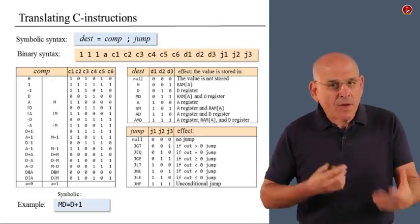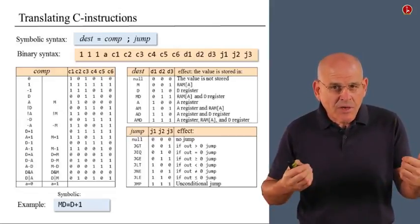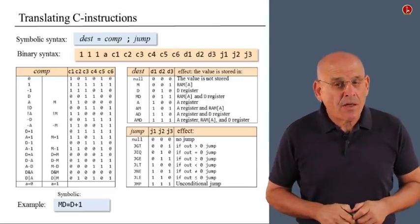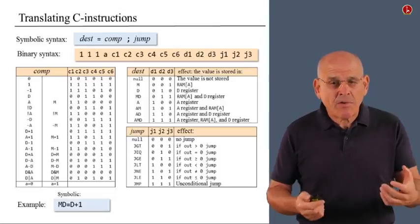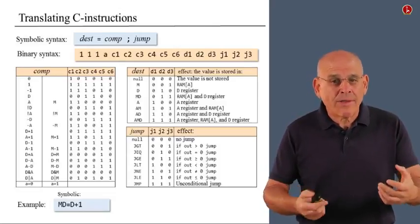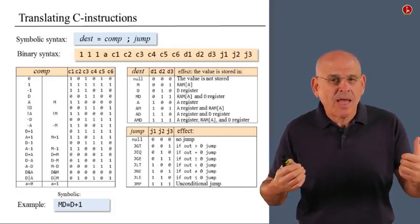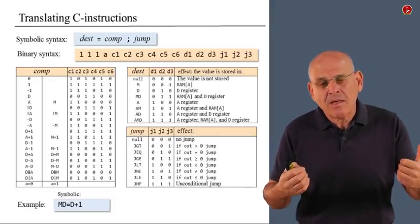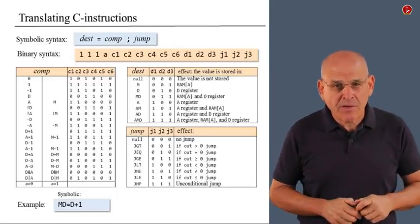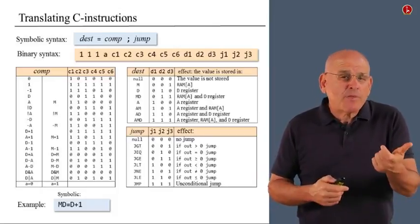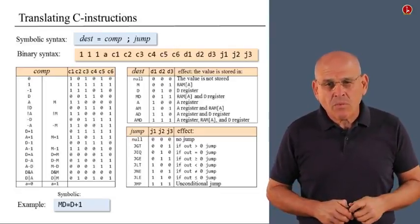So, implicit in what I'm saying is the assumption that we can somehow take this source instruction and decompose it into these three fields. And indeed, this is something that is going to be done by an element of our assembler called parser. The parser is going to take a source statement or instruction written in symbolic code and chop it into three individual fields. And then we can inspect every one of these fields in isolation and act on it. And that's exactly what I'm going to do next.